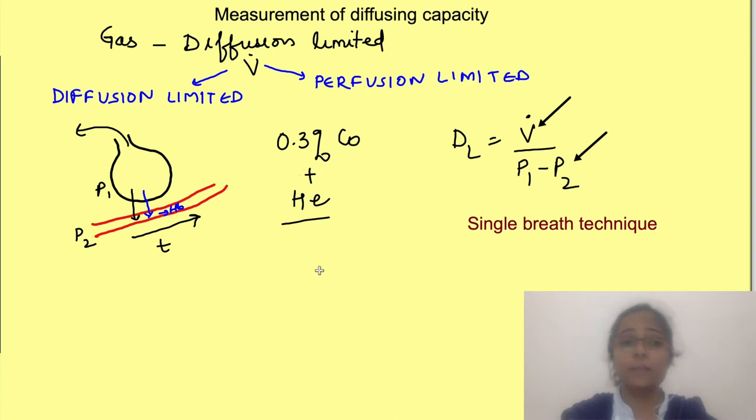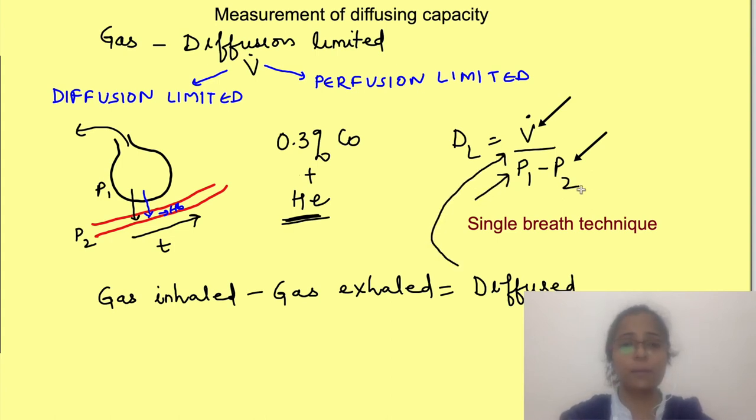Then by determining the difference between the amount of gas inhaled and the amount of gas exhaled and the lung volume by helium dilution method we can know the amount of gas which has diffused and also the alveolar partial pressure of carbon monoxide. So we know P1 and as told earlier P2 is 0 that is the partial pressure of carbon monoxide in blood. Then we put these values in the formula and get the diffusion capacity or transfer factor.